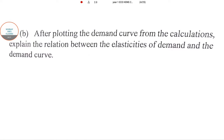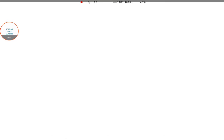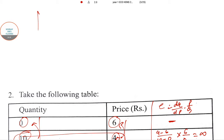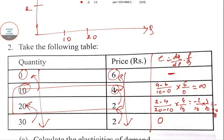After plotting the demand curve, explain the relationship between elasticity of demand and the demand curve. You can plot the demand curve directly here. This is the price-quantity format: price on the vertical axis, quantity on the horizontal axis. When price is 6, no one is purchasing. When price is reduced to 4, quantity is 10. When price is reduced to 2, quantity is 20, doubled. When price remains at 2, it increases again to 30.